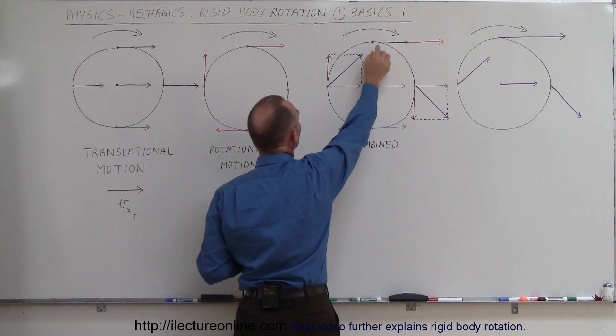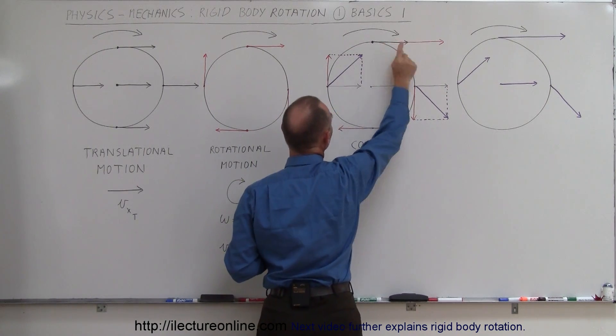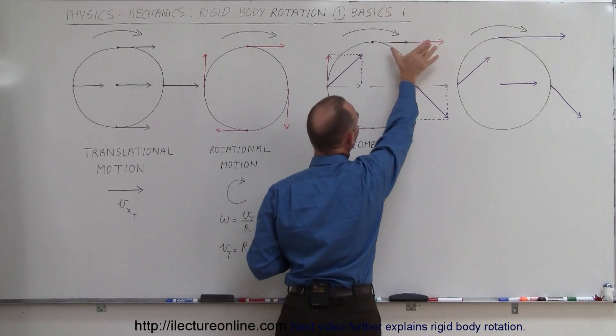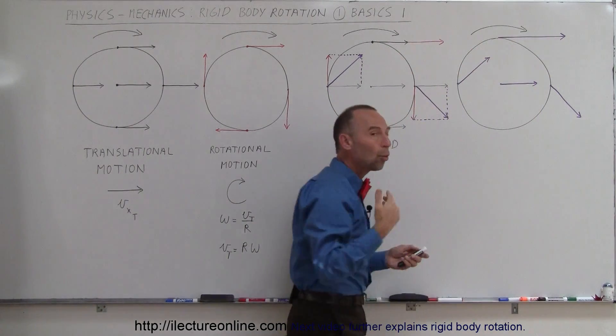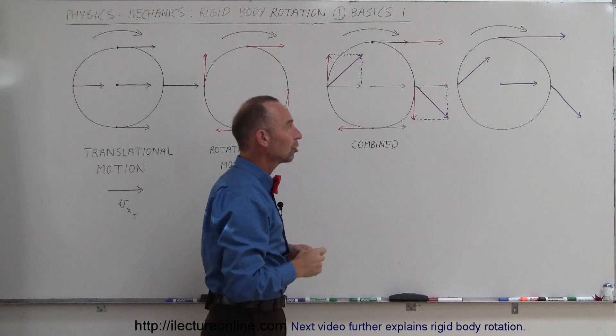On the other hand, at the top of the tire, we have the translational motion to the right, and we have the tangential motion to the right, they're additive, and so you can see here, that the top of the tire is moving to the right at twice the velocity of the motion of the car.